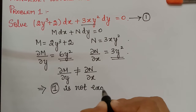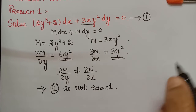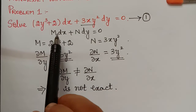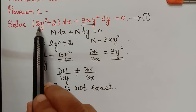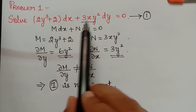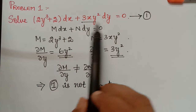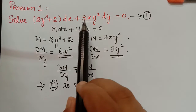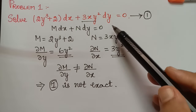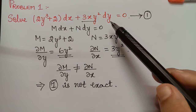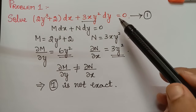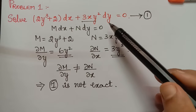Since this equation is not exact, in order to solve it we have to find the integrating factor, multiply it with equation 1 to make it exact, and then solve it. We have certain rules which we have already seen in our previous video to find the integrating factor. Let us apply the rules here.